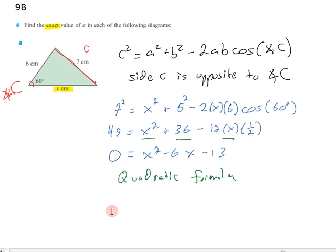The quadratic formula tells us that our variable x will be equal to negative b plus or minus the square root of b squared minus 4ac over 2a.